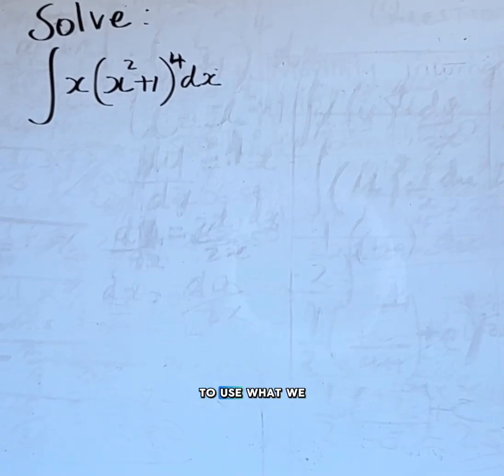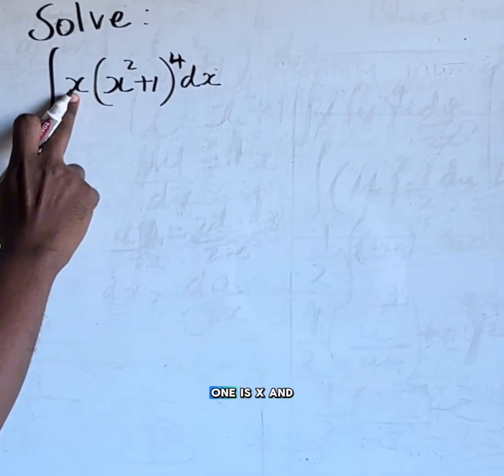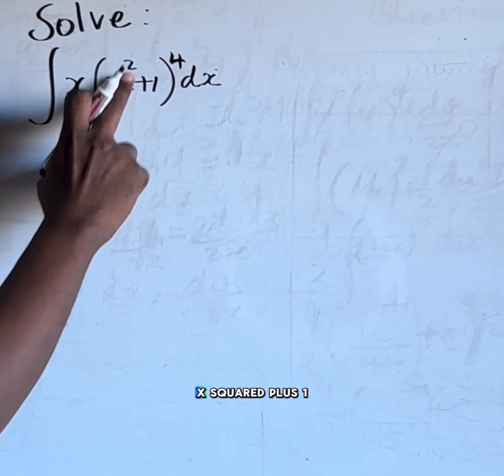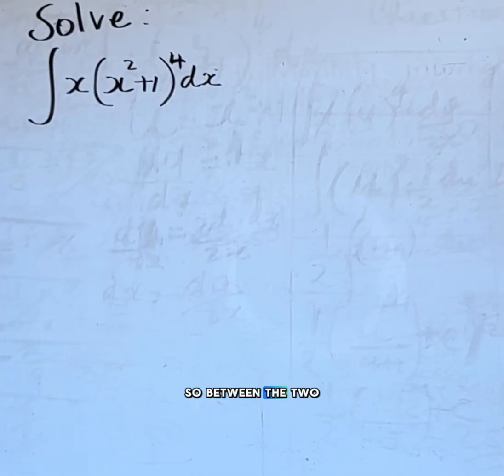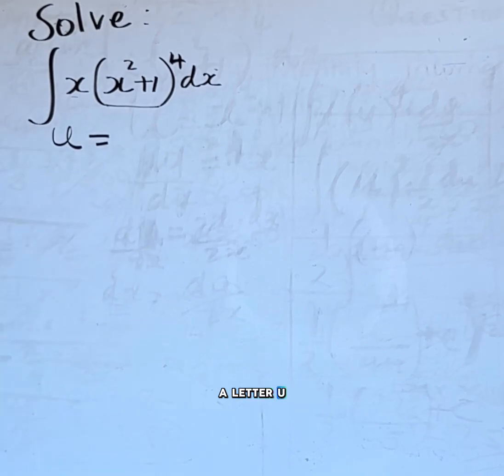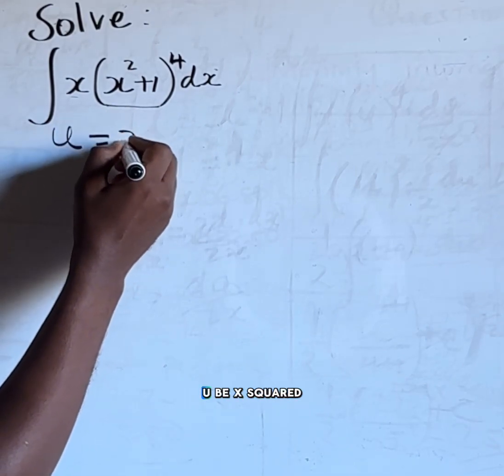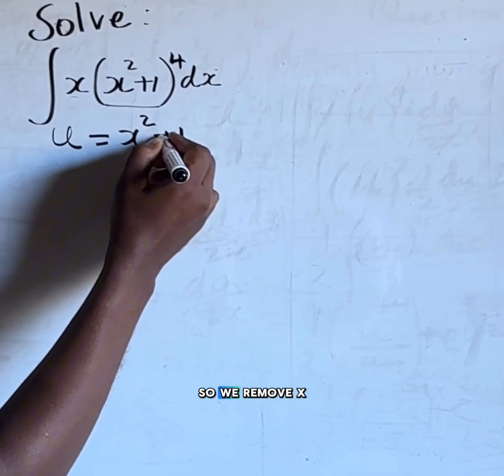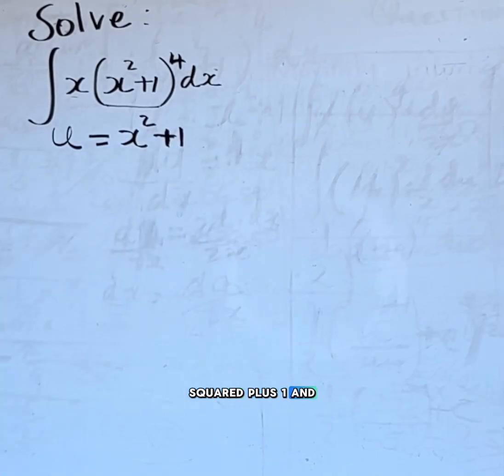So we are going to use what we call substitution method, specifically the u substitution method. We look at these two functions. One is x and the other one is x squared plus 1 raised to the power of 4. Between the two functions, this one is more complicated. So we choose the complicated function and let that complicating function be the letter u. So we let u be x squared plus 1.